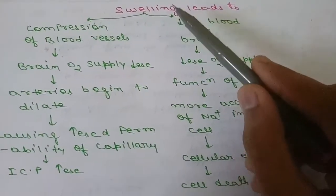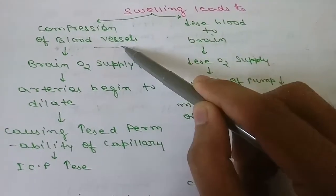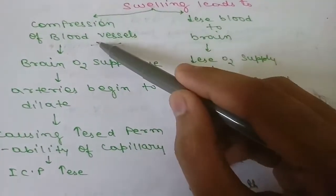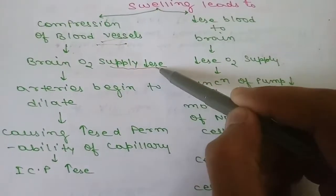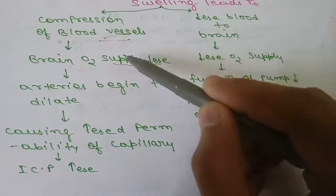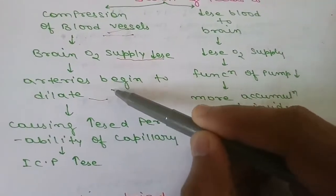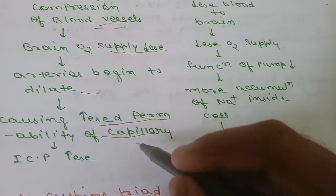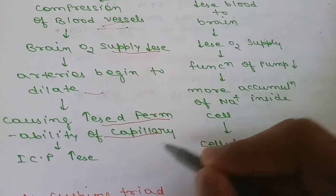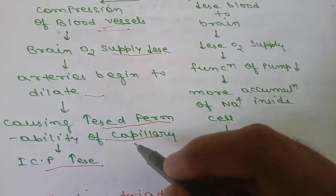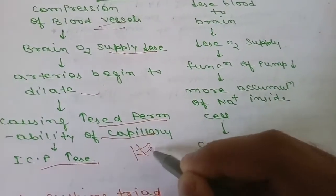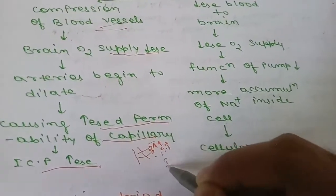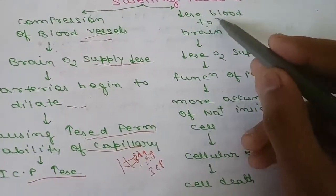When swelling occurs in the brain, it leads to two things. First, swelling compresses the blood vessels because the surrounding tissues have swollen. If blood vessels are compressed, blood and oxygen supply to the brain decreases. In response, arteries begin to dilate, which increases capillary permeability, causing more fluid to move from the capillary into the interstitium, further increasing intracranial pressure.